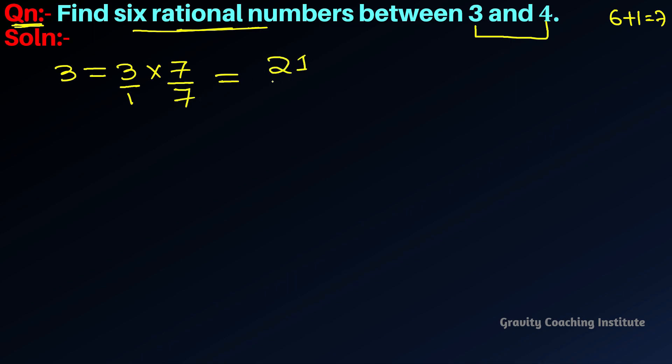So, this is twenty-one upon seven. And for this four, we will multiply it with seven upon seven.